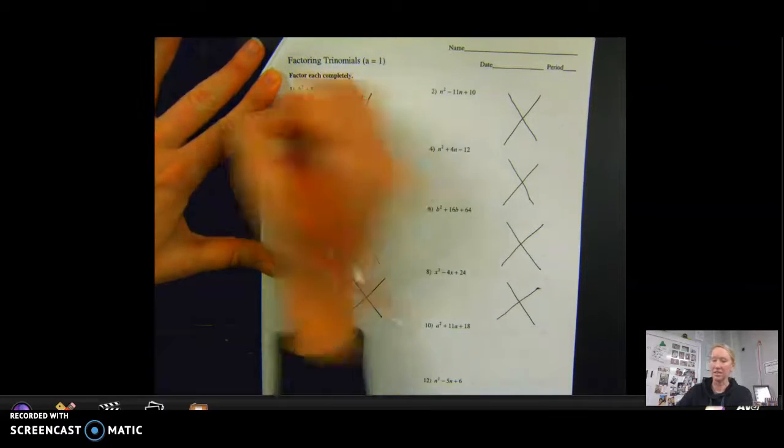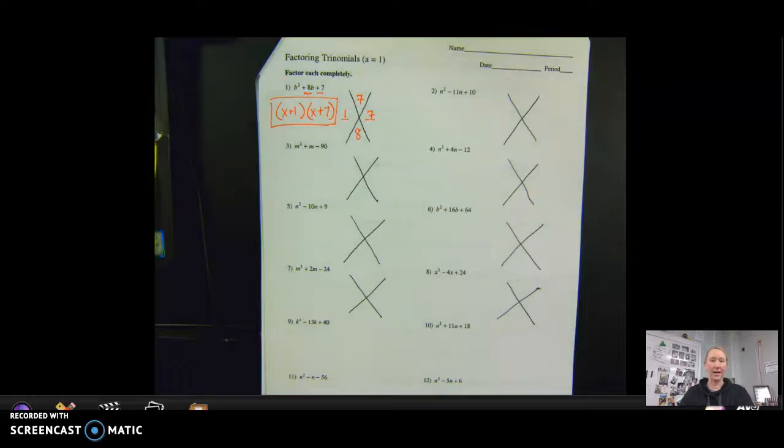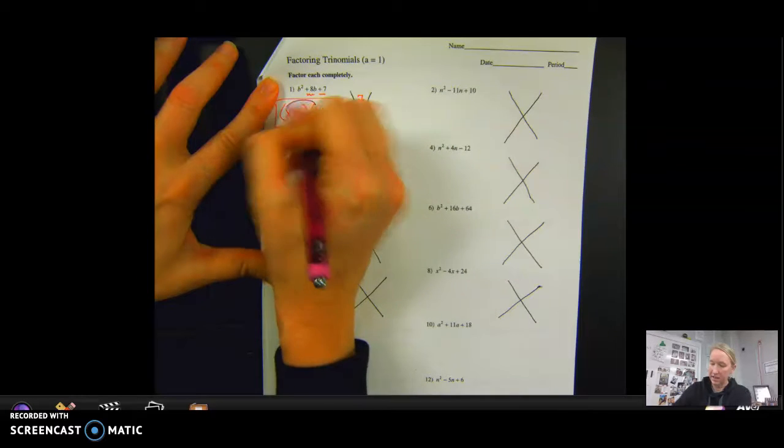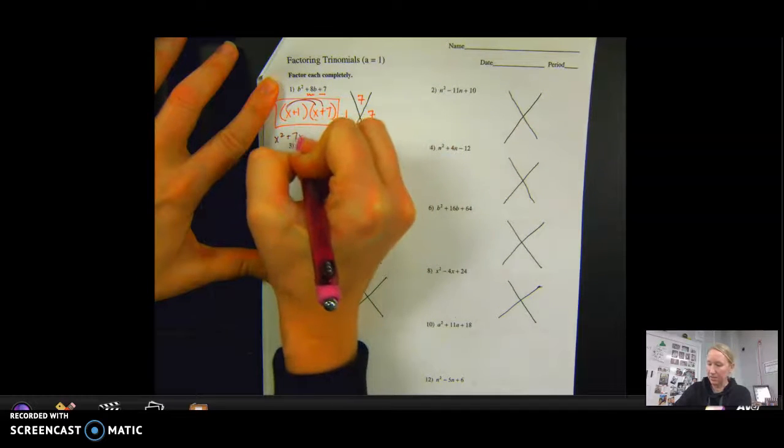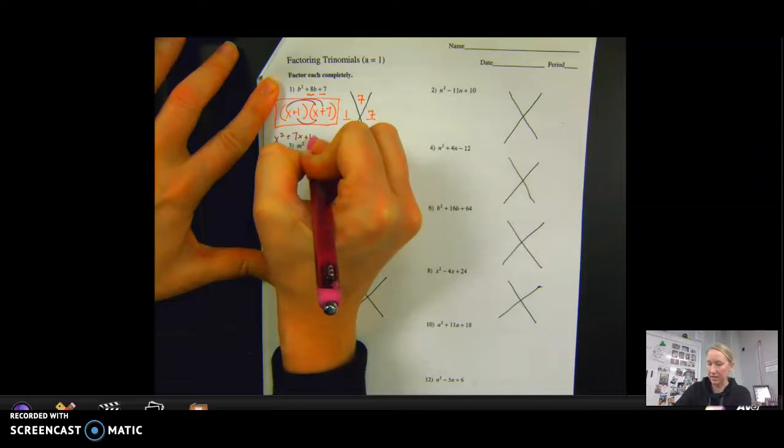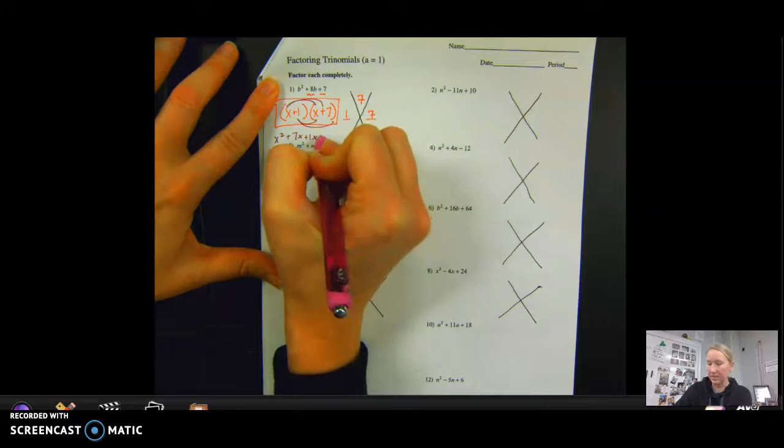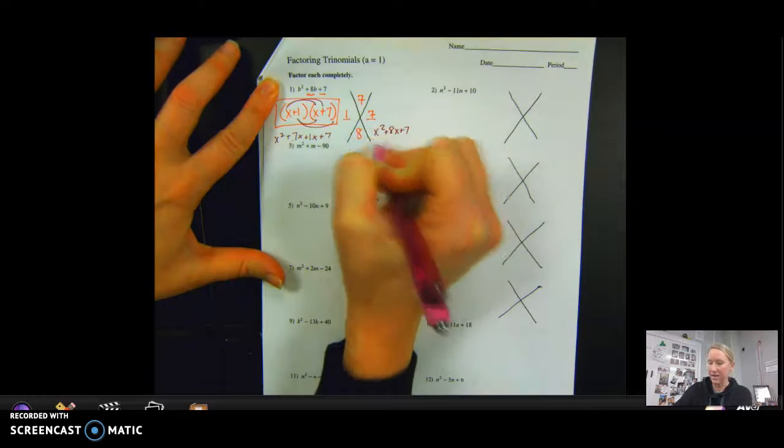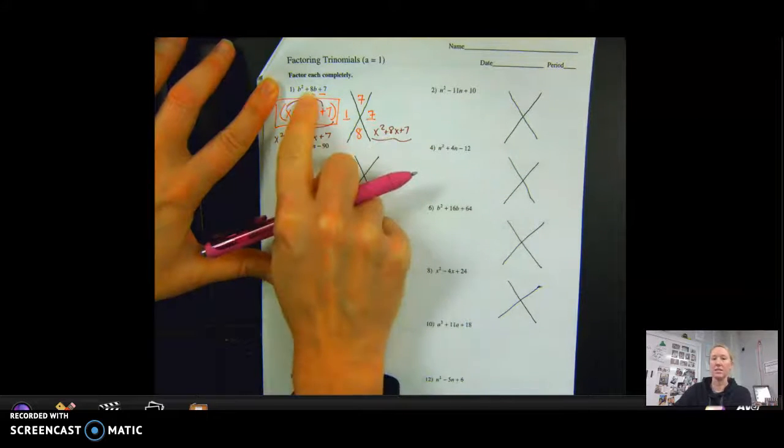and that is just fine. But that is your answer. If I were to FOIL that, so do X times X, I get X squared, X times 7 is 7X, 1 times X is 1X, and then 1 times 7 is 7. Combine my middle two like terms, I get X squared plus 8X plus 7. If you notice,